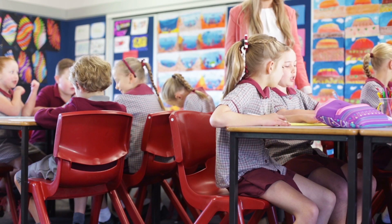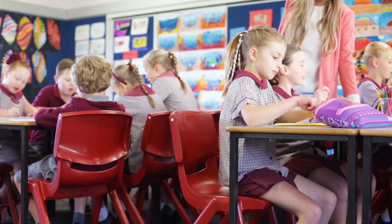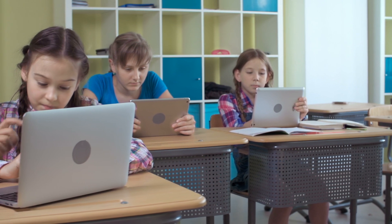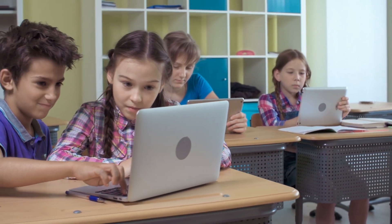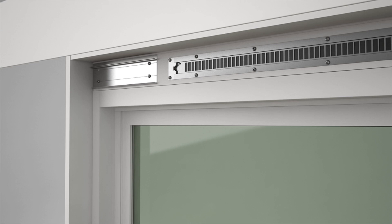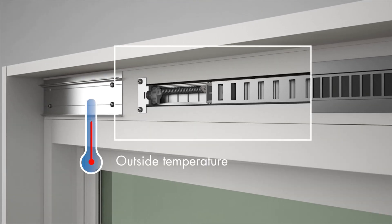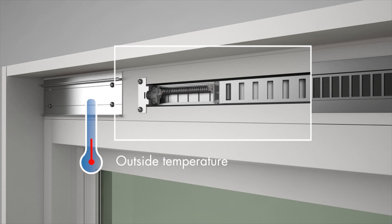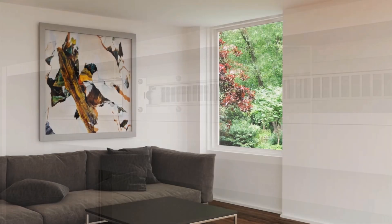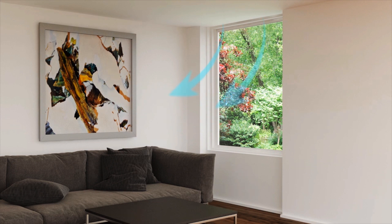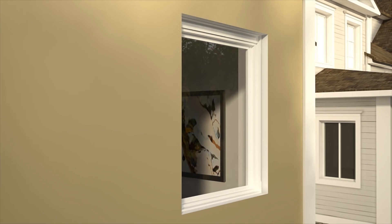Its draft-free air flow also reduces the humidity that can lead to mould in tightly sealed buildings, helping to create healthy, liveable spaces. The AWS Ventient is activated by a biometal shape memory alloy spring, precision calibrated to Australian temperatures and conditions, that expands and contracts as the outside temperature changes. No manual control or mains power is required. With its concealed design, the AWS Ventient is an integrated part of the window system and easy to specify as part of a high-performance glazing solution.